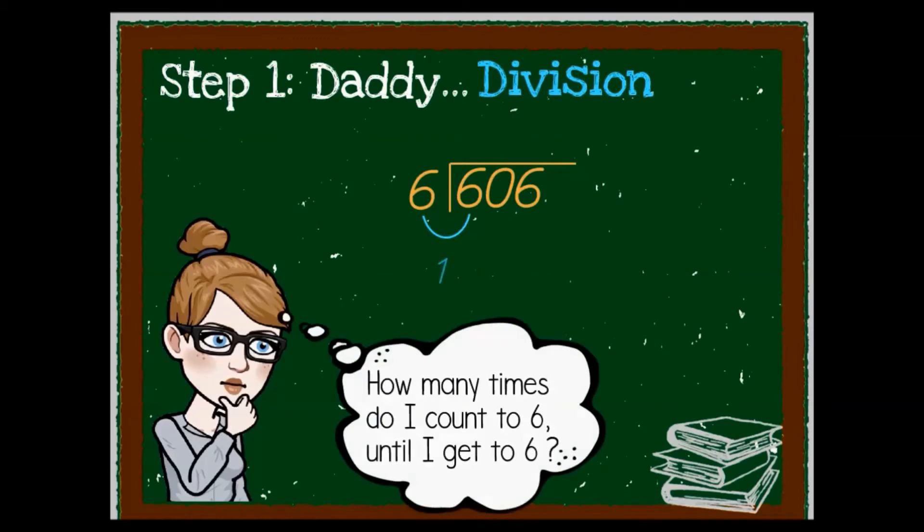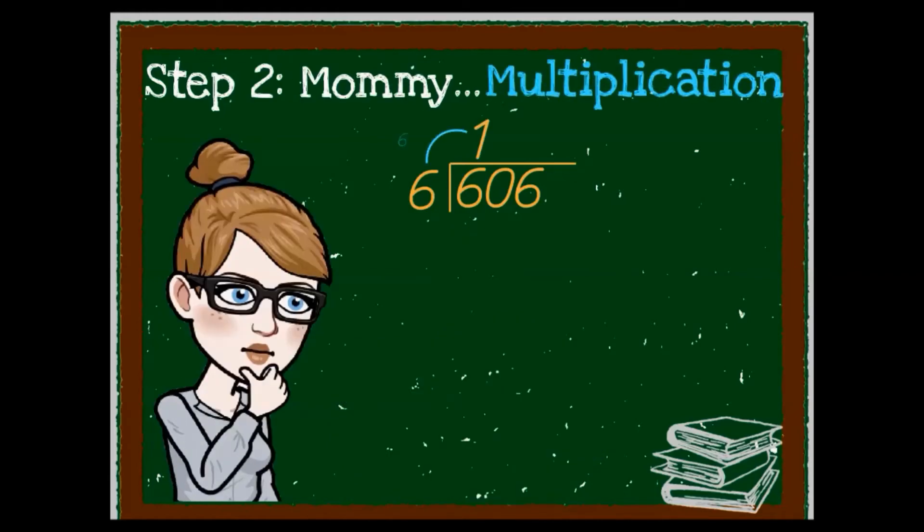Start with daddy for division. Six goes into six once. Mommy for multiplication. One times six is six. From the roof to the door and move it to the floor.